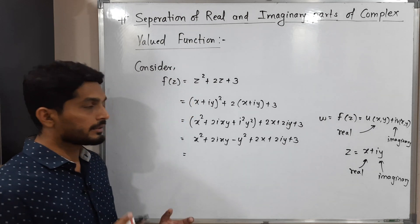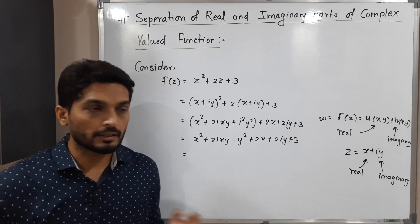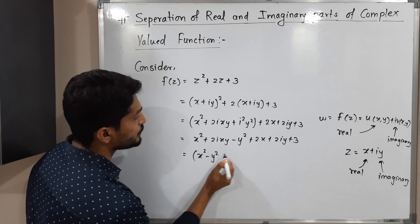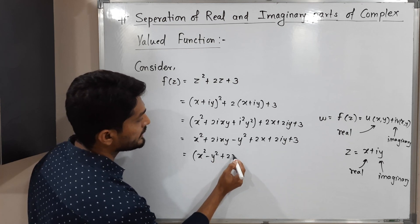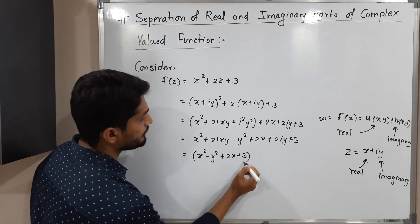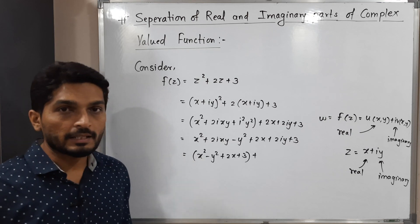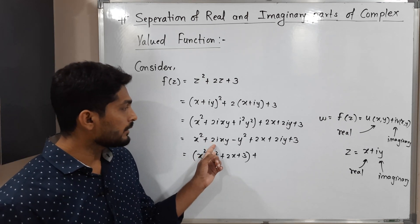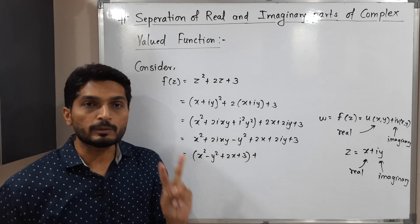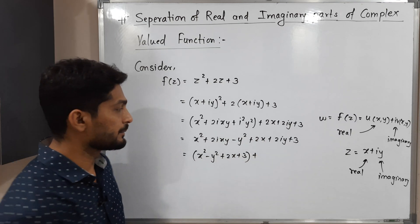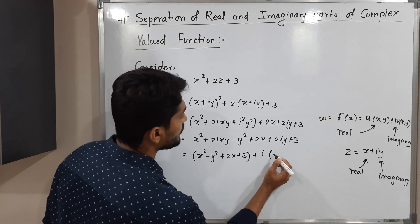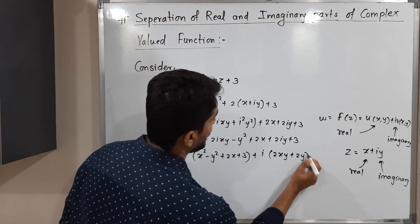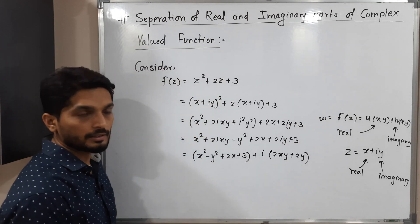Now let us collect the real part — that is, terms without i. We get x squared minus y squared plus 2x plus 3. Then the imaginary part — terms with i. There are only two such terms, so taking i as common we get i times (2xy plus 2). So this is the imaginary part and the other is the real part.